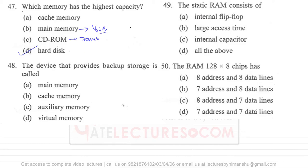Question 48: the device that provides backup storage is called—for this particular case, main memory is not providing backup storage because it is volatile. That means as soon as you turn off your computer, your memory will be erased. Cache memory is also volatile. Virtual memory is not used to store data; virtual memory is a concept used in operating systems to execute programs. You need to understand the concept of paging to understand virtual memory. So virtual memory is not used to store data. The answer is option C, that is auxiliary memory.